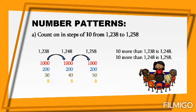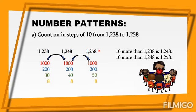Focus on the tens place: thirty plus ten equals forty, and forty plus ten equals fifty. So the sequence goes one thousand two hundred thirty-eight, one thousand two hundred forty-eight, one thousand two hundred fifty-eight. Ten more than one thousand two hundred thirty-eight is one thousand two hundred forty-eight. And ten more than one thousand two hundred forty-eight is one thousand two hundred fifty-eight.